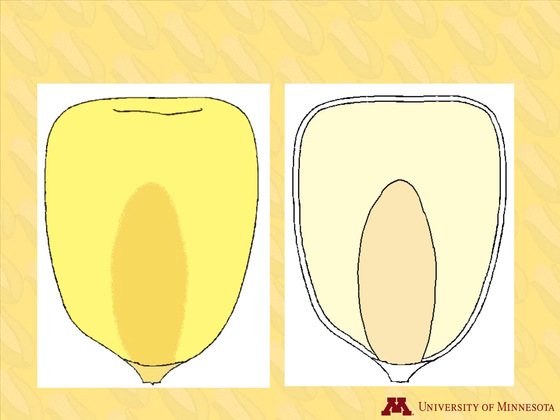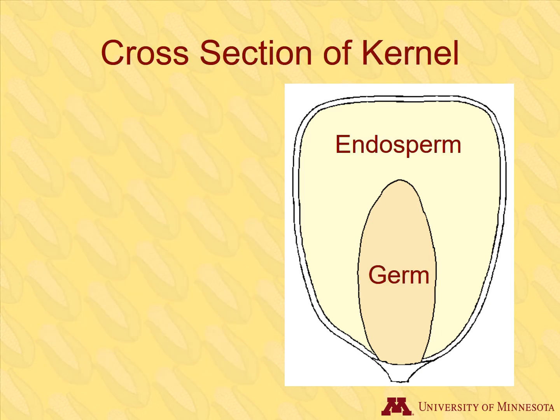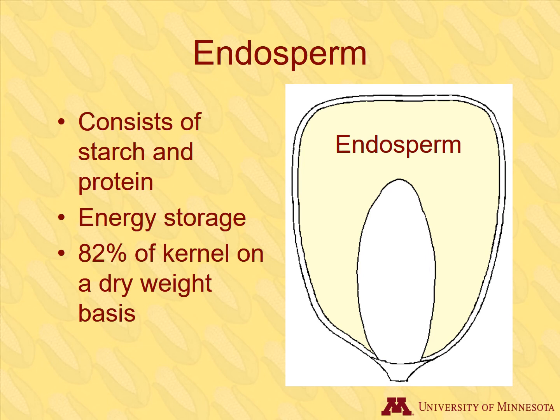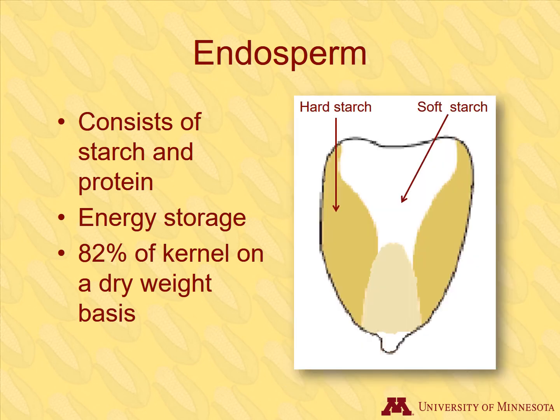Let's look at a cross section of the corn kernel to see what's inside. Imagine we sliced our original corn kernel in half going the long way. Here is the cross section that shows the inside of the kernel where the endosperm and germ are. The endosperm consists of starch and protein that provide energy for the germinating seed. Most of the kernel is endosperm. It is used in the widest variety of products, so it is the most economically important part of the kernel. The endosperm of dent corn consists of both hard and soft starch.